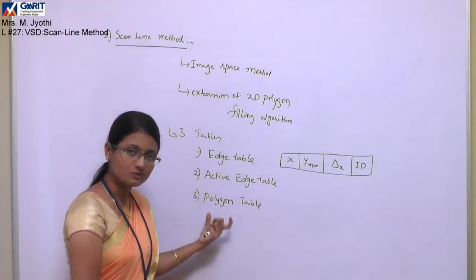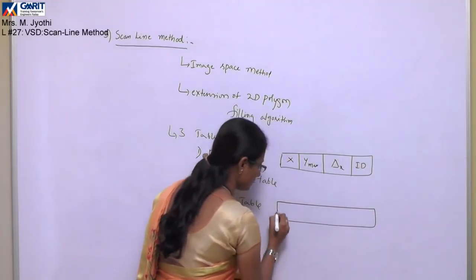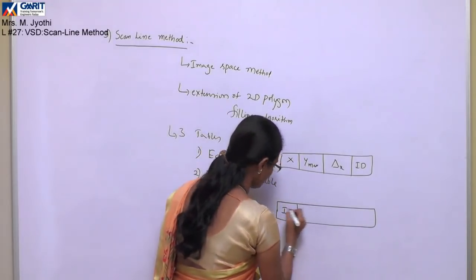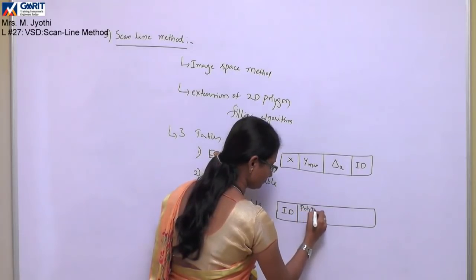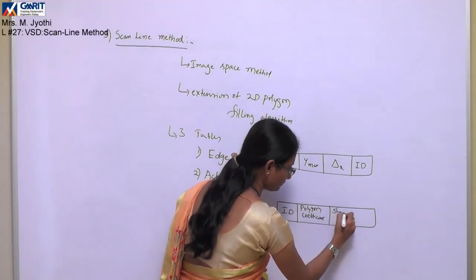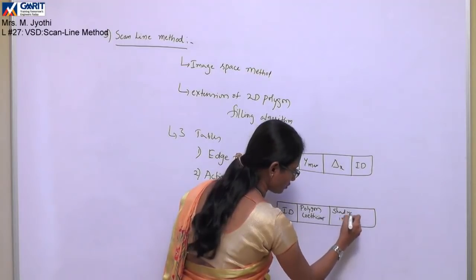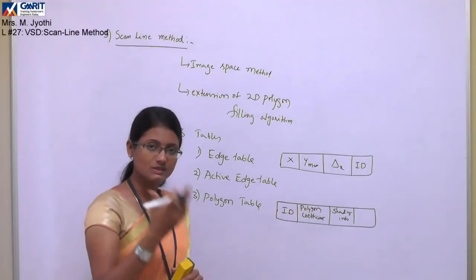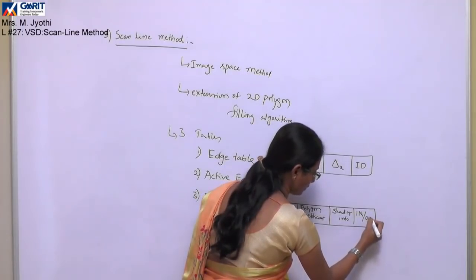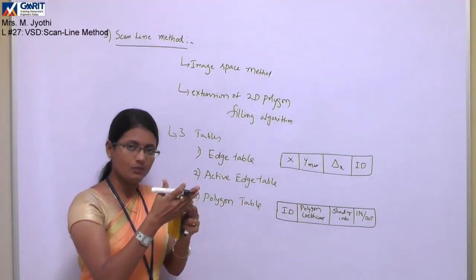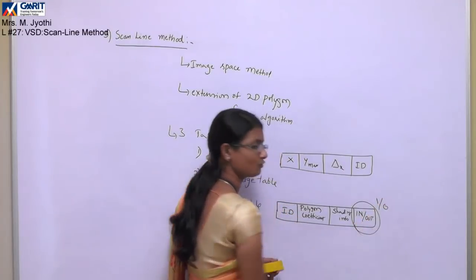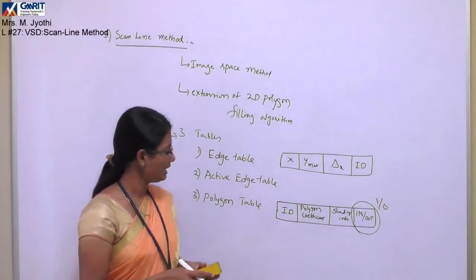The polygon table stores entries like: first, the ID of each polygon; second, the polygon coefficient values; and third, the surface intensity or shading information — though shading information is only required when performing shading effects. The polygon table also stores an in/out flag for each scan line, indicating whether that surface is currently inside or outside. One bit of information is sufficient to store this — either one or zero.